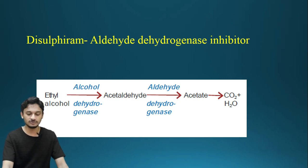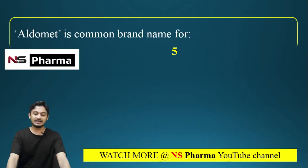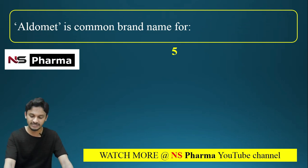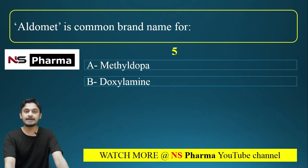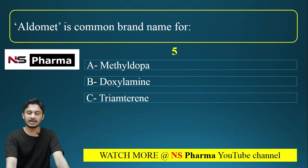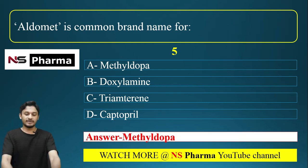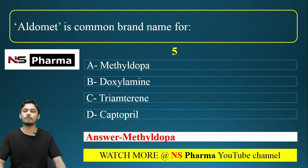Question number five: Aldomet is the common brand name for — Option A, Methyldopa; Option B, Doxylamine; Option C, Triamterene; Option D, Captopril. The correct answer is Option A, Methyldopa. Aldomet is the brand name for Methyldopa.